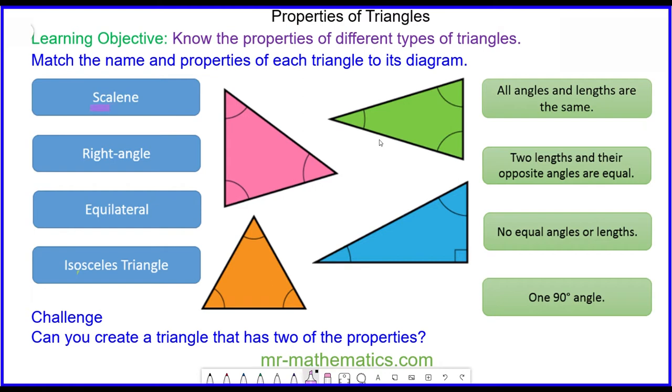So the first triangle is a scalene. A scalene triangle is a triangle where all the sides and all the angles are different. So this would match with this descriptor.